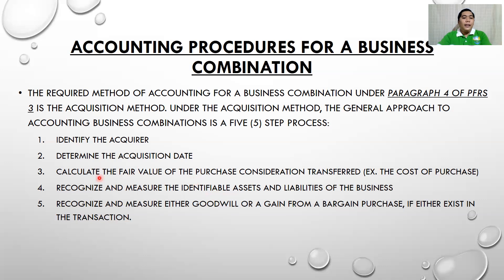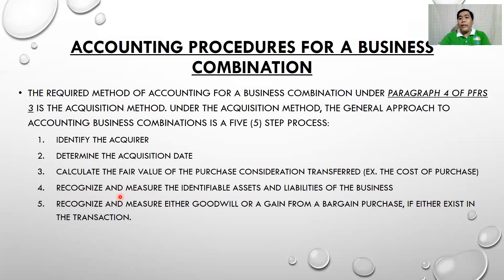Once we identify the consideration, we need to recognize it — meaning identify and separate the assets, liabilities, and equity. Then we measure them: in financial accounting, measuring means giving value to those things we have recognized. There are things we need to recognize and things we do not, and those we recognize must be measured. We need to measure the identifiable assets and liabilities of both the acquirer and the acquiree.